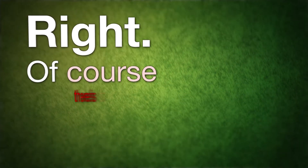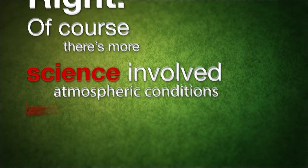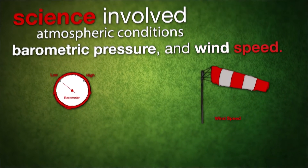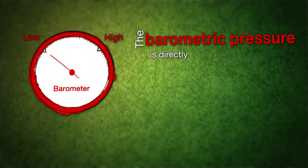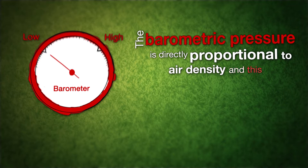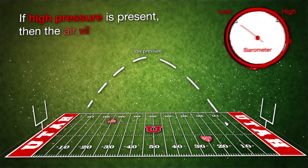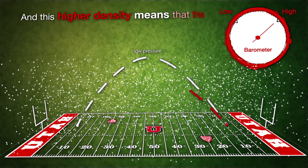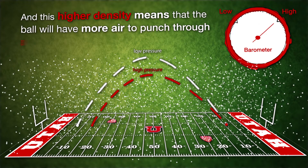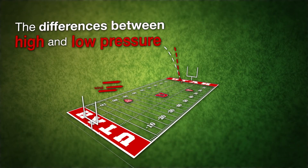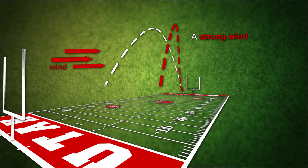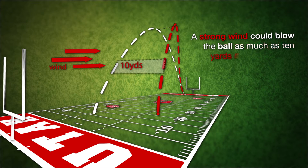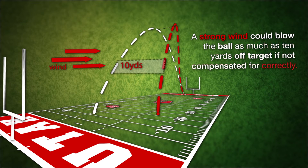Of course there's more science involved: atmospheric conditions, barometric pressure, and wind speed. The barometric pressure is directly proportional to air density, and this has a huge effect on a football. If high pressure is present, then the air will have a higher density. This higher density means that the ball will have more air to punch through, and will thus travel a shorter distance. A strong wind could blow the ball as much as 10 yards off target, if not compensated for correctly.